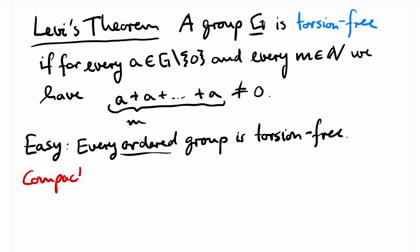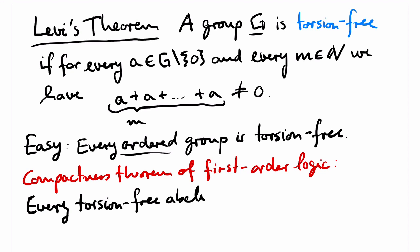With the compactness theorem from first-order logic, it will be relatively easy to see that for abelian groups, we have a converse to this. Every torsion-free abelian group can be expanded to an ordered group. This is a result due to Levy.